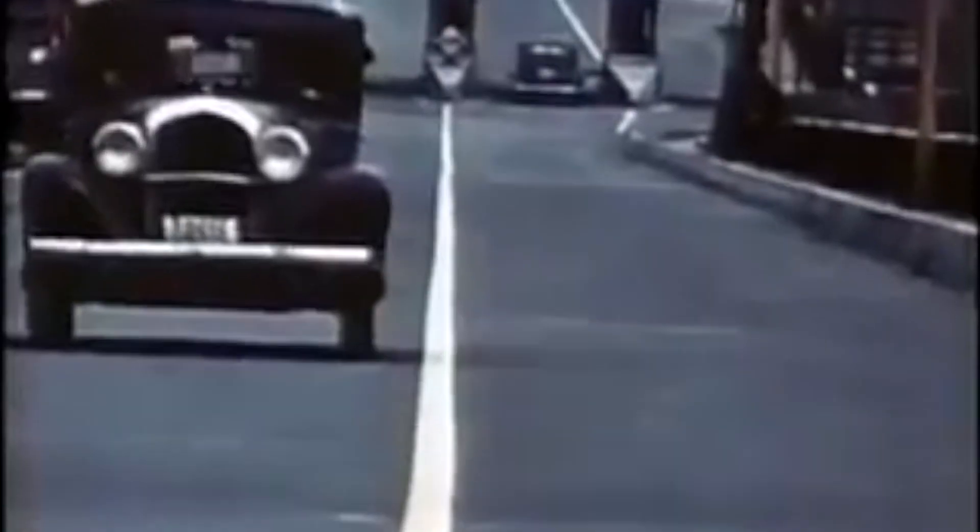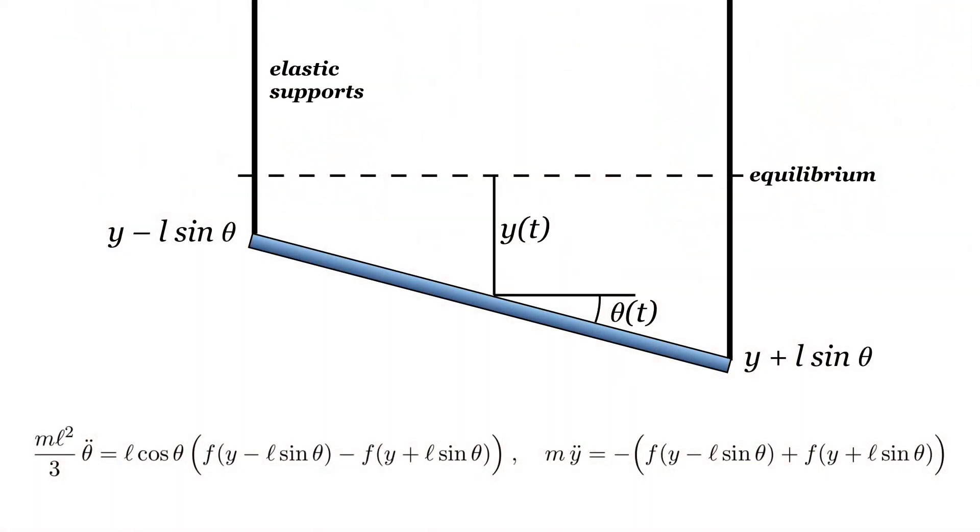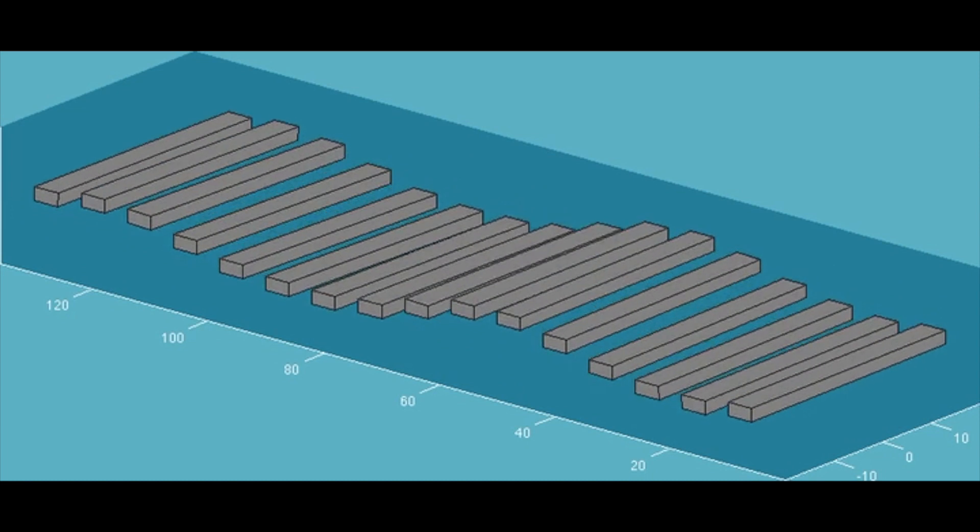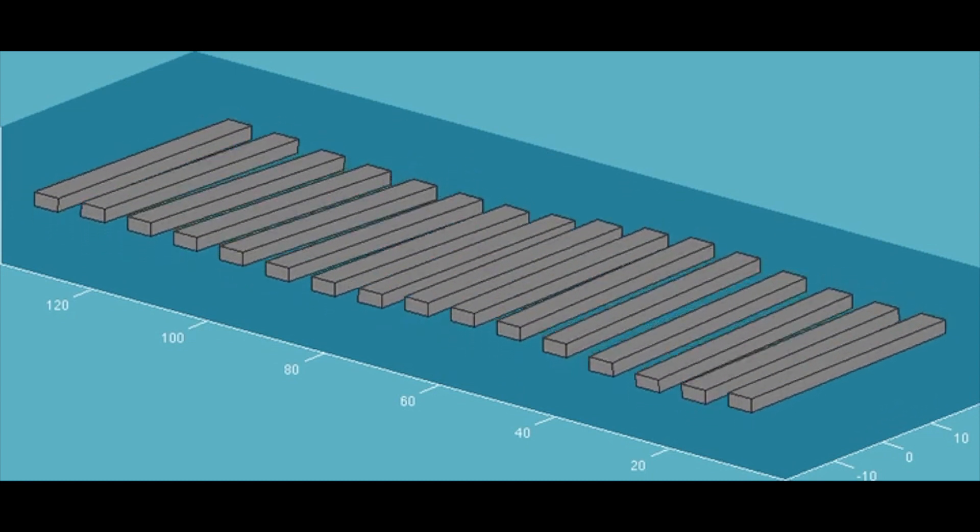See, a bridge can undulate end-to-end, those are transverse waves, but it can also twist back and forth. It has torsional motion. Mathematical models of the Tacoma Narrows Bridge show that even on windy days, the transverse motion was damped and stable, and the high wind speed wasn't capable of driving it hard enough to fail.